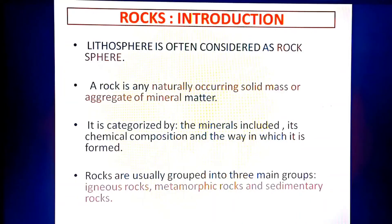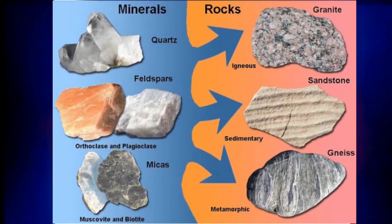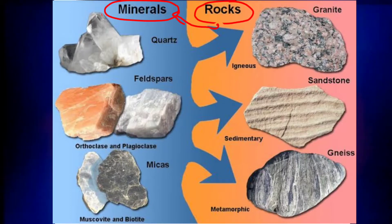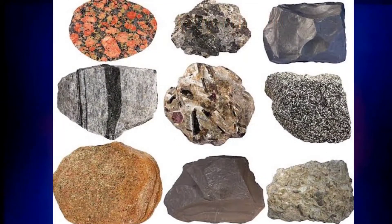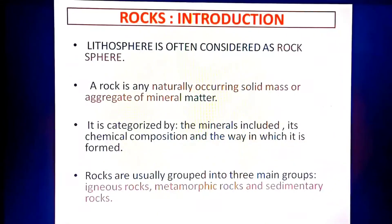The first basis is the minerals included — which minerals have made this rock, and which minerals are contained in a particular rock. Every rock has different minerals, so this is one way they differ. The second basis is chemical composition: every rock has a different chemical composition because it contains different minerals.